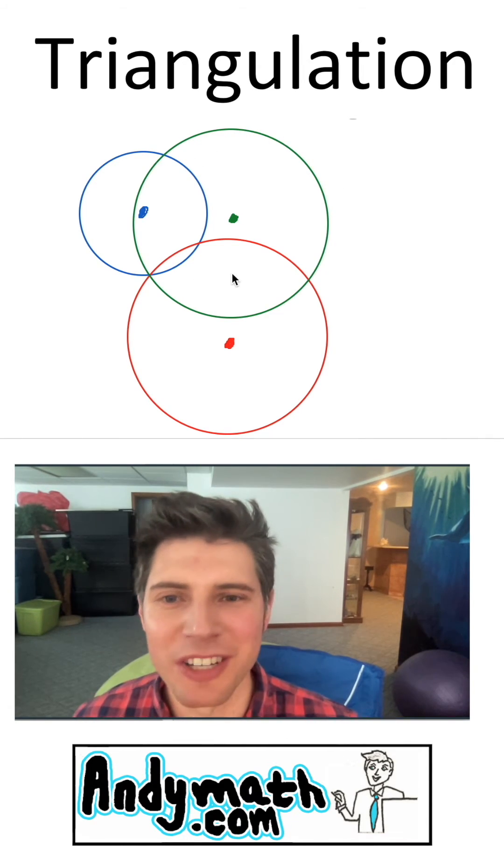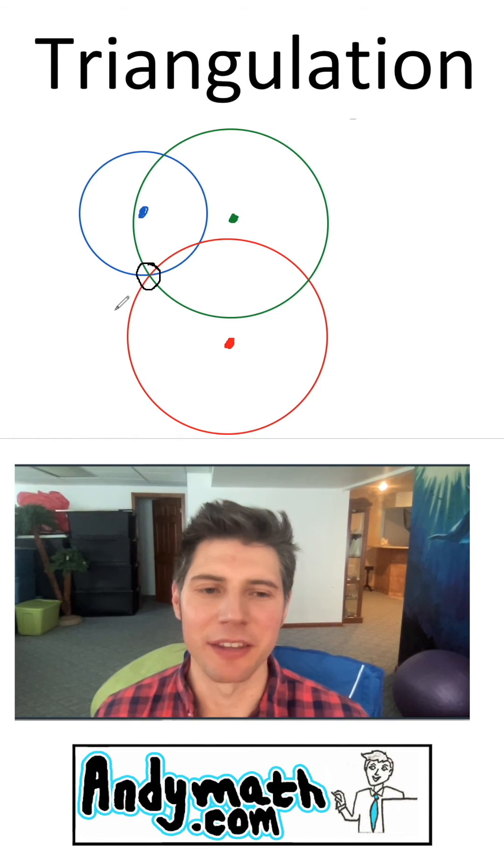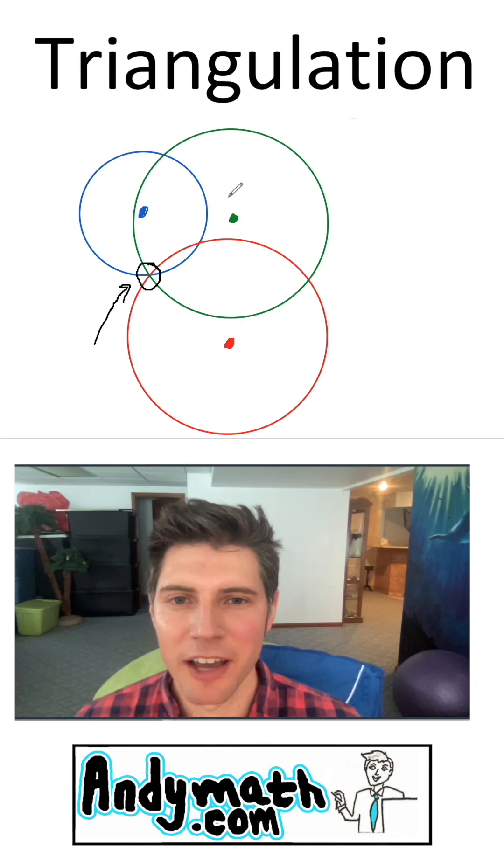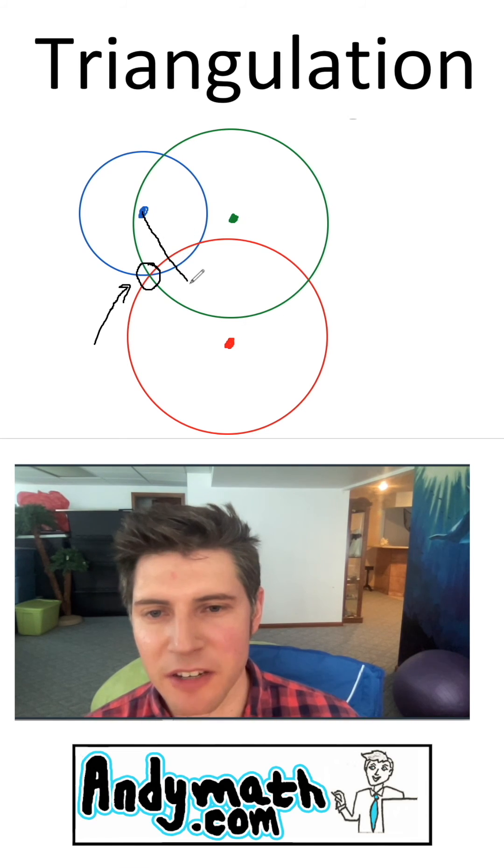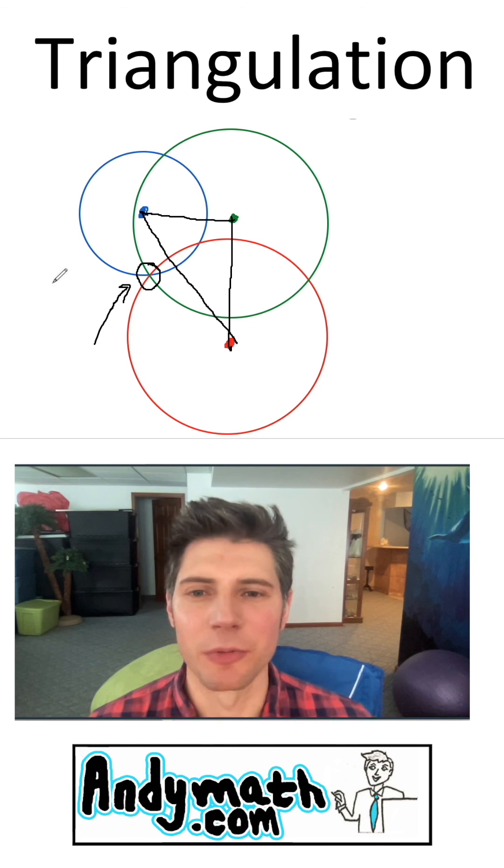So now we know it's somewhere along this green circle but the only point that all three circles will give us is that point right there. So now we found the cell phone and the reason it's called triangulation is because these three towers are the vertices of a triangle and that is how triangulation works.